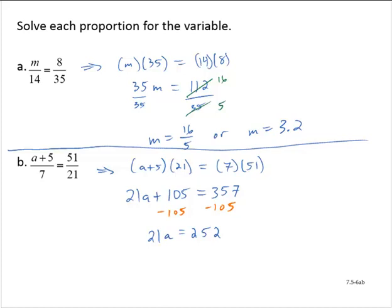And now dividing through both sides by 21. 252 divided by 21 is 12. And so we find that A is equal to 12.